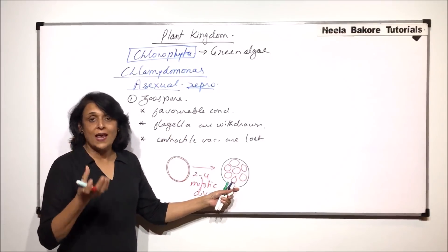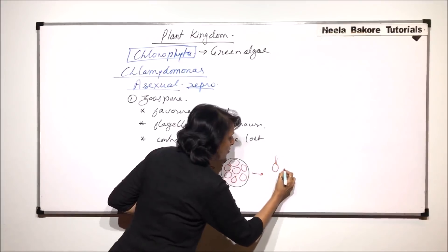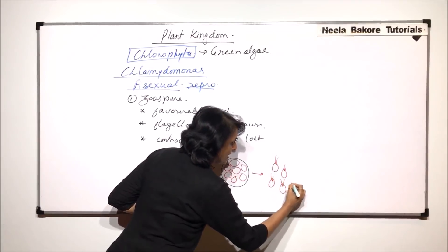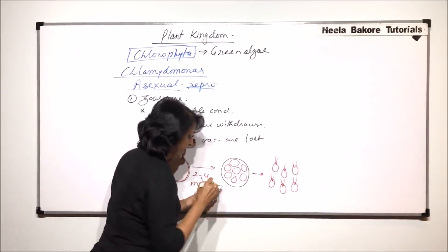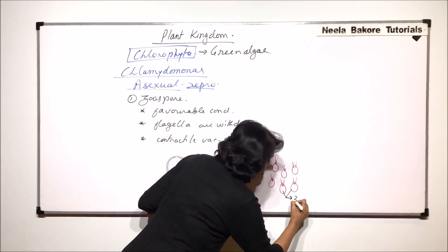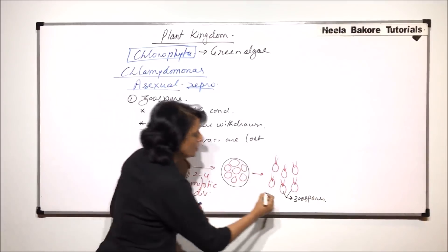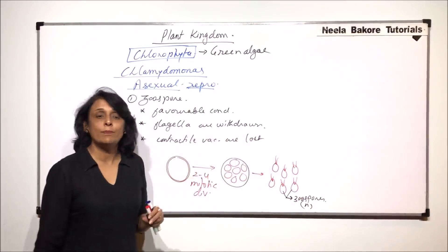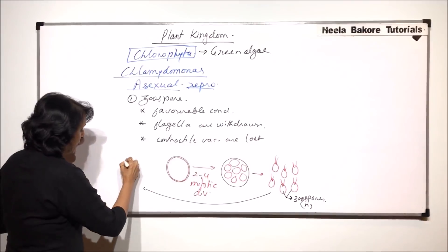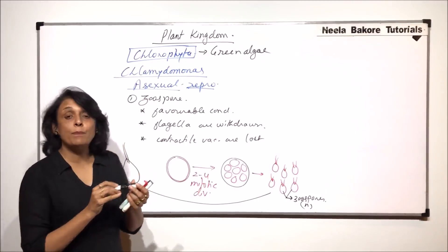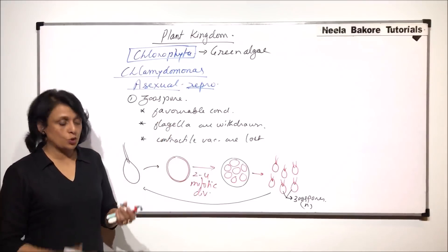When this parent cell ruptures, these cells would be released. Each one is going to resemble a small Chlamydomonas — they are going to develop the flagella. The parent cell ruptures, releasing the cells, and now these structures are the zoospores. The division was mitotic and the parent cell is haploid, so these zoospores are also haploid. They would start leading their life in the form of a typical biflagellate haploid Chlamydomonas. This is how asexual reproduction takes place by zoospore formation.